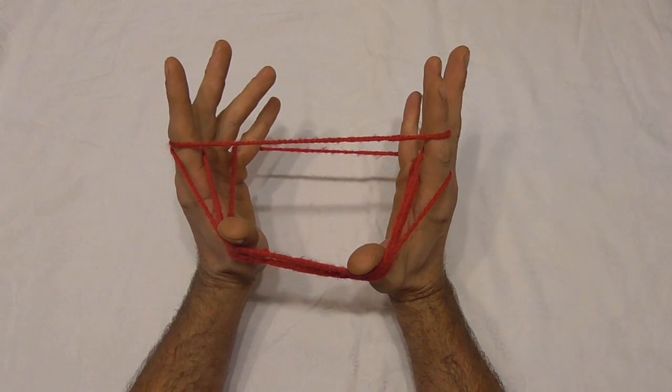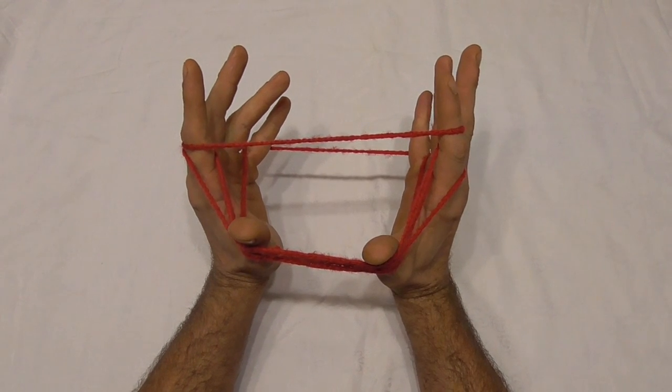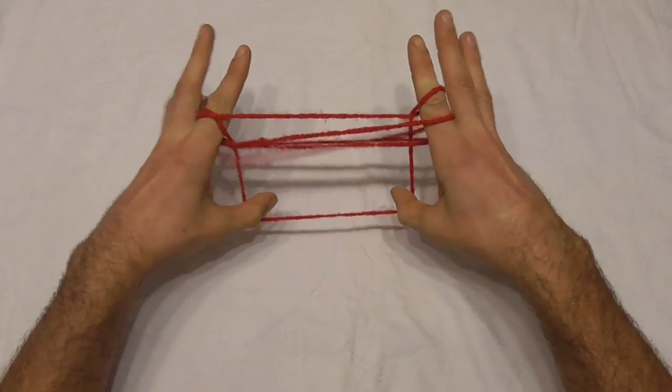It should look like that. Now I want to go over the pointer finger string and pull it down with my thumbs. Just like that.